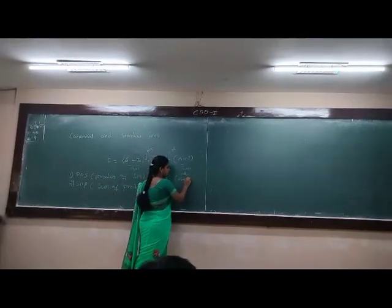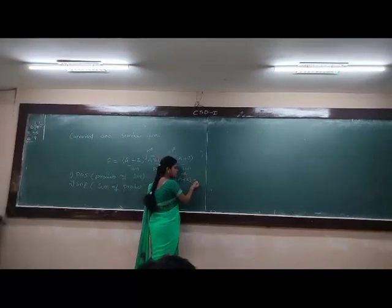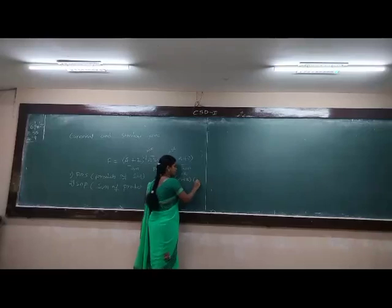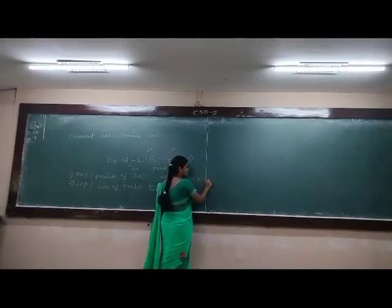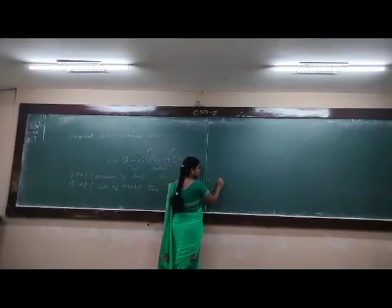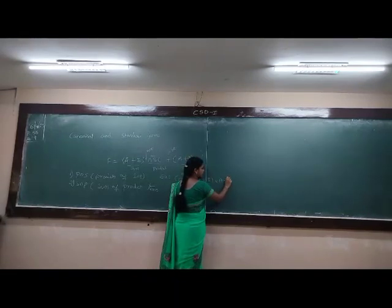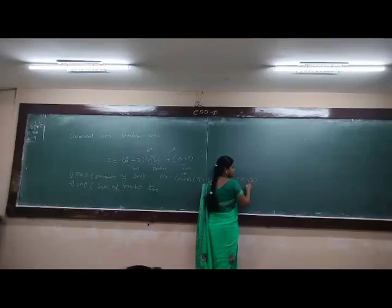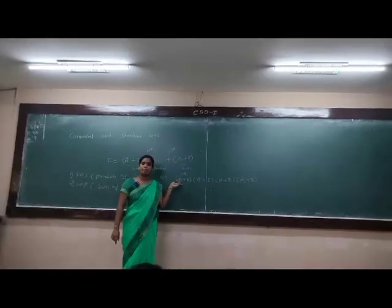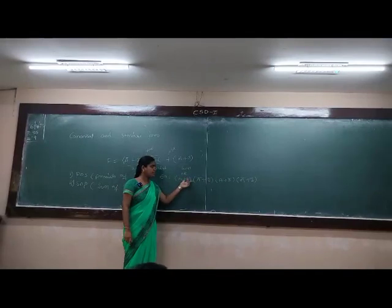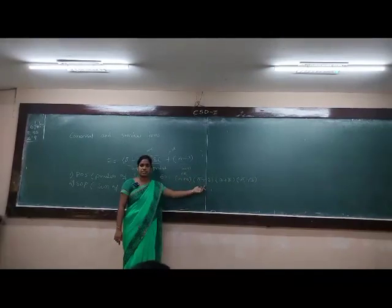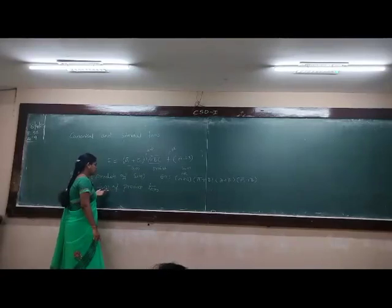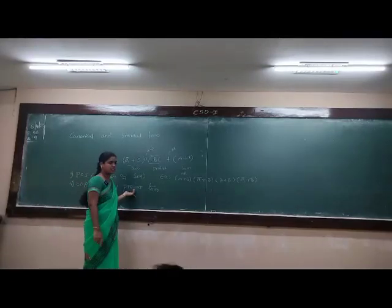A bar plus B. So what do we have to do? We need product terms. A bar plus B becomes A bar B bar plus B bar. In a complete POS, we need only sum terms as the product. So next, sum of products.